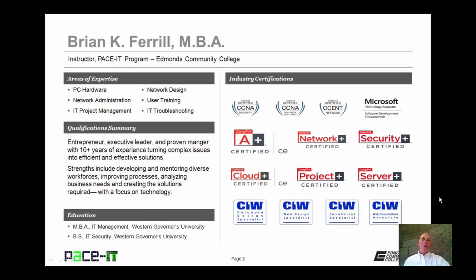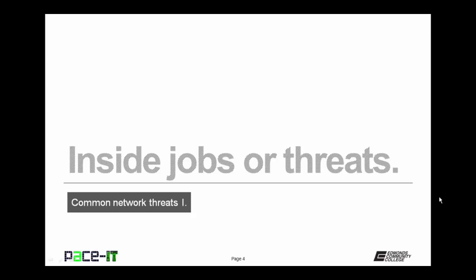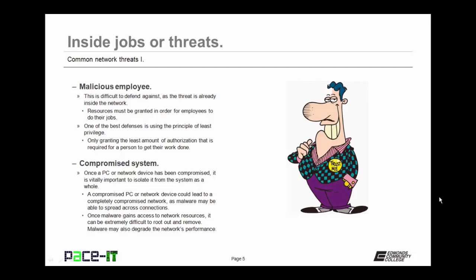Good day, I'm Brian Farrell, and welcome to PACE IT's session on Common Network Threats Part 1. Today we're going to be discussing inside jobs or threats, and we're going to conclude with some outside threats to your network. I'm going to begin by talking about inside jobs or threats. First up is malicious employees — they are difficult to defend against as they are already inside the defenses of the network and have been granted resources to do their job. One of the best defenses against malicious employees is using the principle of least privilege — only granting the least amount of authorization required for a person to get their work done.